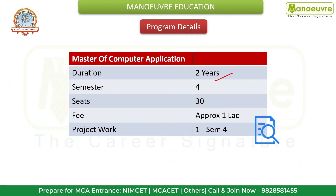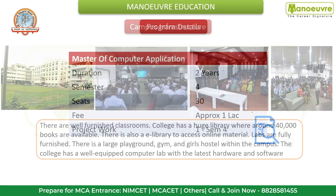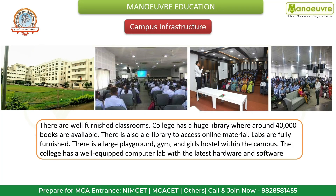The MCA program is a two-year course divided into four semesters. Total intake seats are 30. The fee structure is approximately one lakh rupees per year, though this may vary, so check the official website for updates. Every student is required to carry out full-time project work in Semester 4.